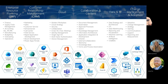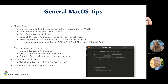We'll jump into M365 tips and tricks. Starting with general Mac OS tips — things that will help you be more effective on your Mac from a security and productivity standpoint. First, use Pathfinder as a better tool for file navigation on Mac OS. It's a third-party tool — not a sponsorship. The built-in Finder app has a few things to be desired coming from the Windows world. To see hidden files inside Finder, the hotkey is Shift+Command+Period, and you can also right-click to open Finder in a specific location.